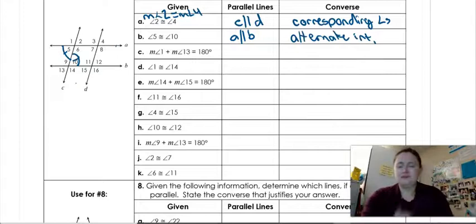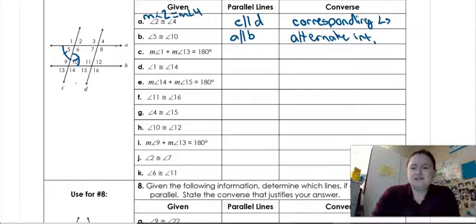But it already says converse, so you don't have to write the converse thing. Okay. Let's do one more, and then you guys can get to work on this on your own. But the measure angle 1 plus measure angle 13 adds to 180.